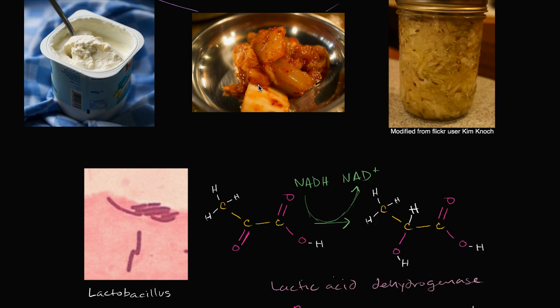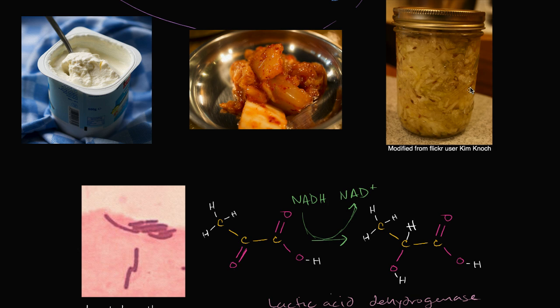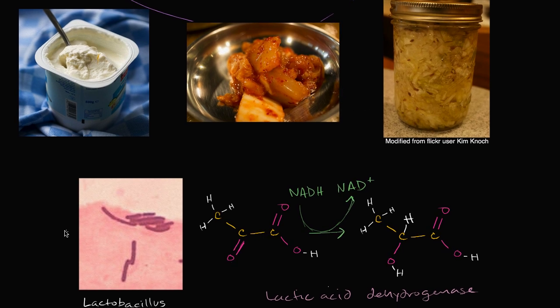This right over here, if you're into Korean food, this is kimchi. This uses a variation of lactobacillus to once again perform lactic acid fermentation on the sugars in the vegetables. This is sauerkraut. Once again, a variation of lactobacillus, a species of lactobacillus performing lactic acid fermentation on the sugars in the cabbage. Sauerkraut literally means sour cabbage, and that's what it is. And so let's think a little bit more about what's going on.